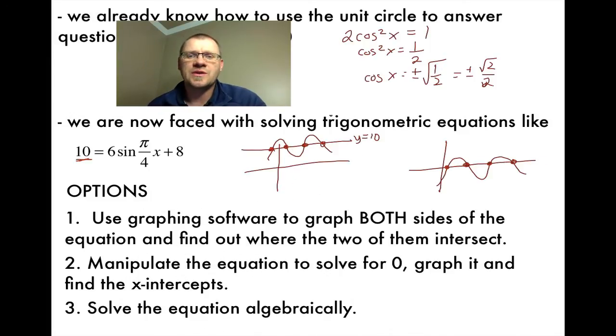In doing that, we would just be moving everything to one side and plugging this new function into the Geogebra program. We just subtract 10 from both sides, and then your x-intercepts would be your answers. In both of these cases, these values would all be the same for x. And the third one, which we're actually going to do an example of, is solving this equation algebraically. And you wouldn't need to graph it at all.